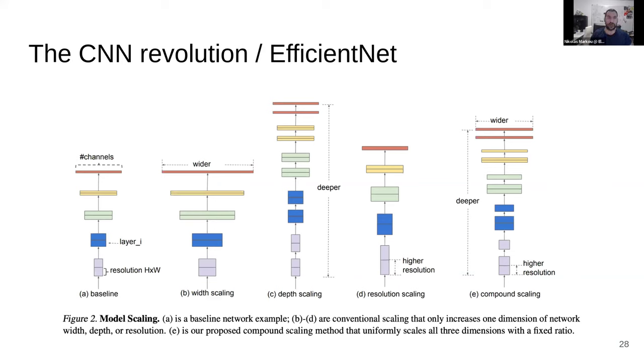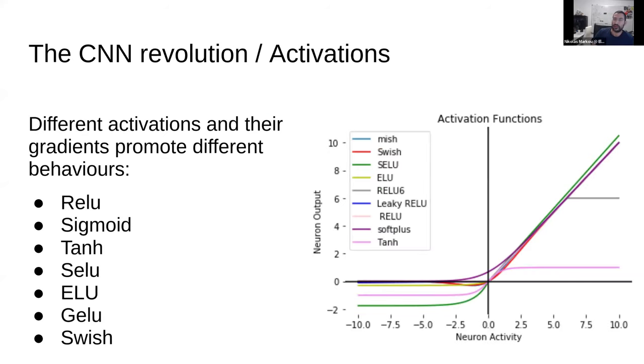And EfficientNet also had some what is called model scaling, which became very important later on. This is how you increase the hyperparameters of the model based on the image size. Bigger image, more channels, or bigger windows, or more depth, et cetera.